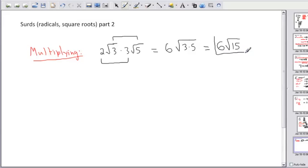So this would be simplified. That's how I multiply two surds. I just multiply the numbers in front of the square roots and then I multiply the square roots themselves.